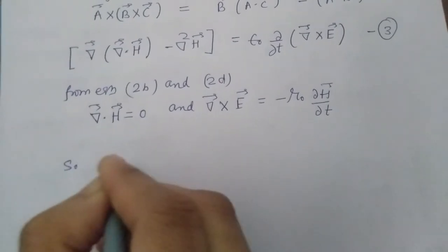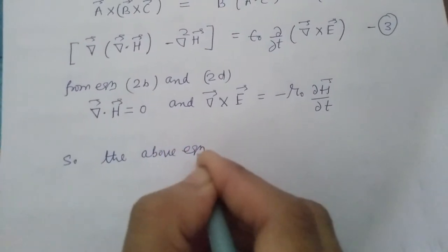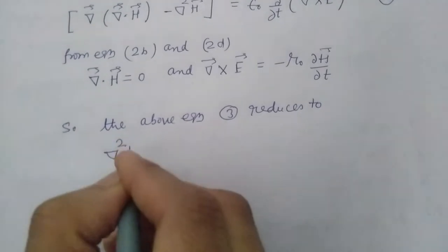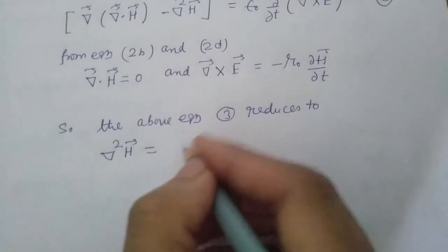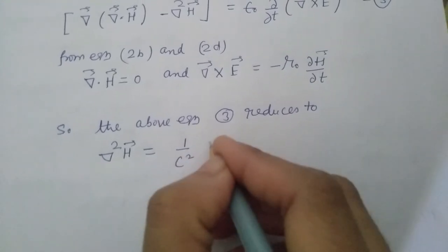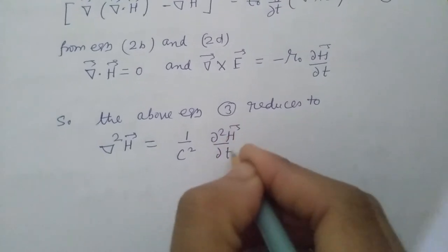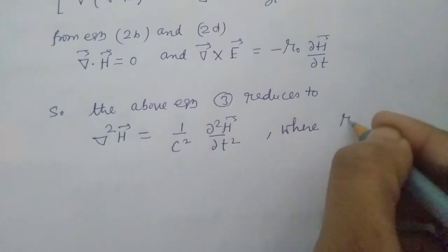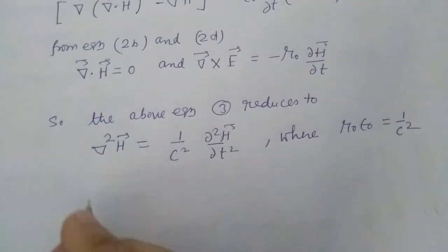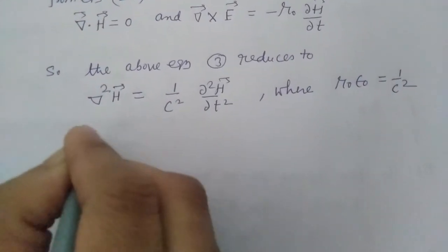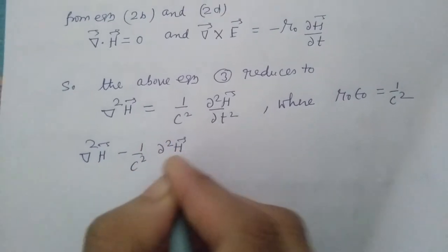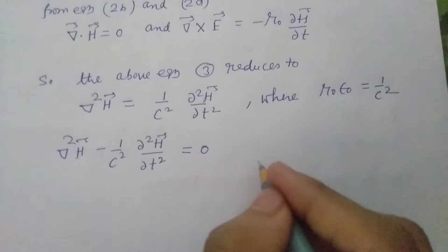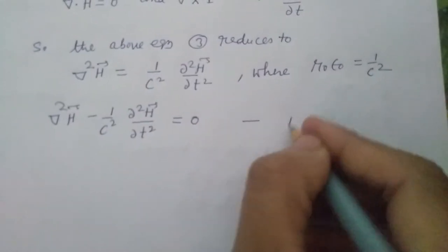So the above equation 3 reduces to del squared H equal to (1/c squared) ∂²H/∂t², where mu naught epsilon naught equals 1/c squared. We can write the above equation as del squared H minus (1/c squared) ∂²H/∂t² equal to 0. This is equation number A.